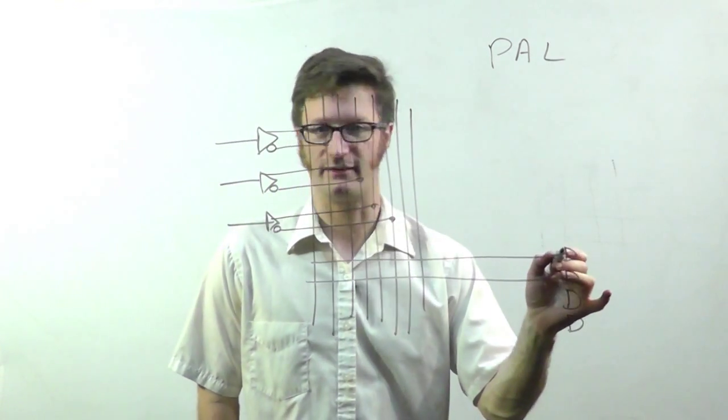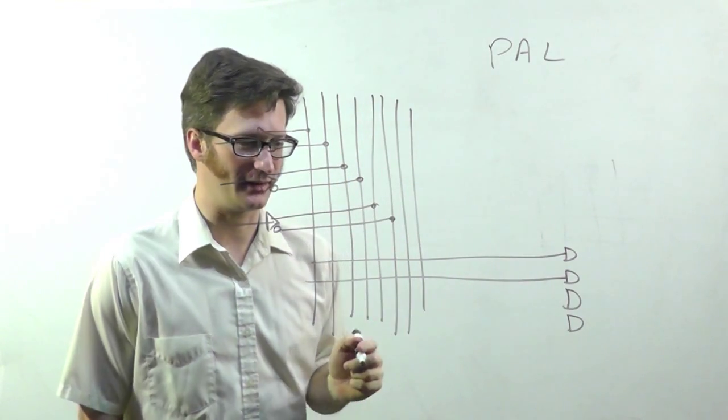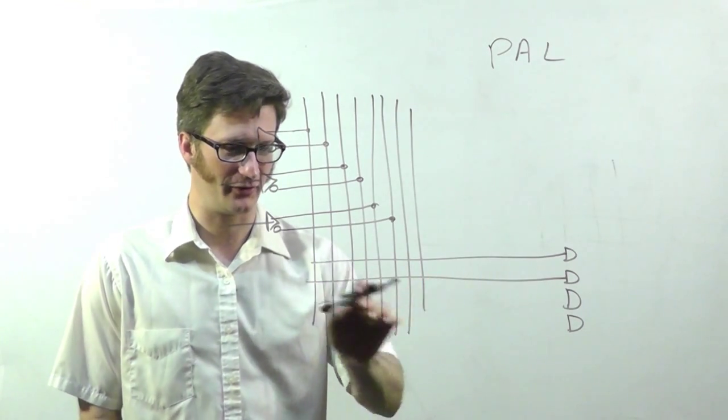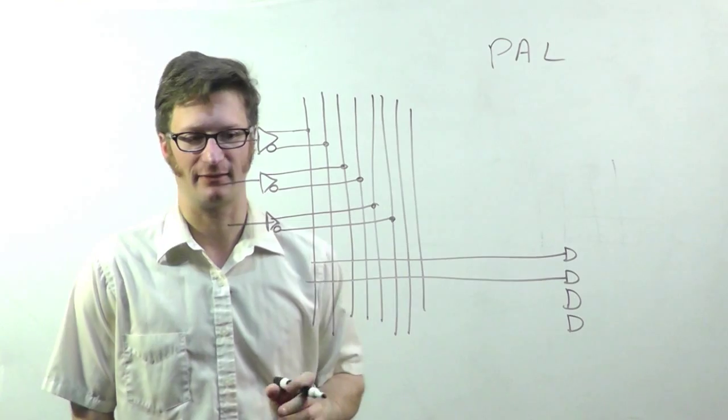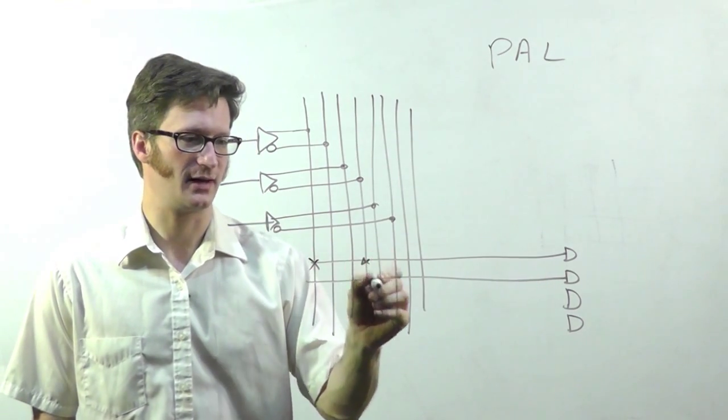Now, each of these is not really a one input AND gate. What they are, are however many wires there are here, AND gates. And then you can program the connections here.